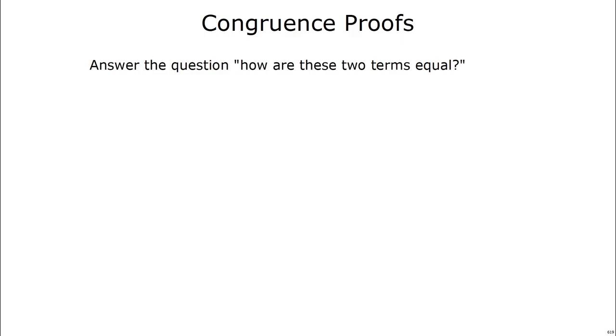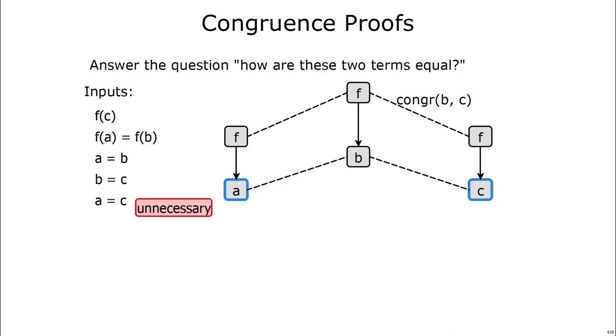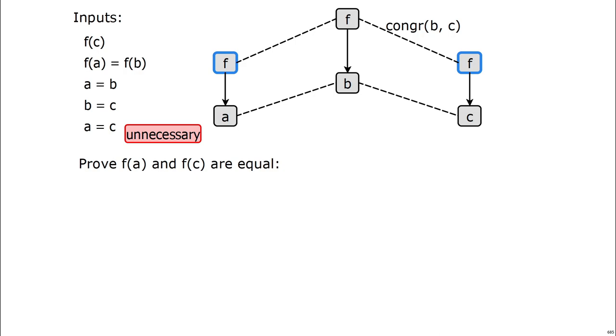Proofs from congruence closure answer the question, how did these two terms come to be equal? Let's try and get a proof that a is equal to c. And we'll do it in the same way that we described why a and c are equal in the previous slide. They're connected by two dotted lines, the one from a equals b, and the one from b equals c. And by transitivity of equality, this proof is now valid. We've proved that a and c are equal.